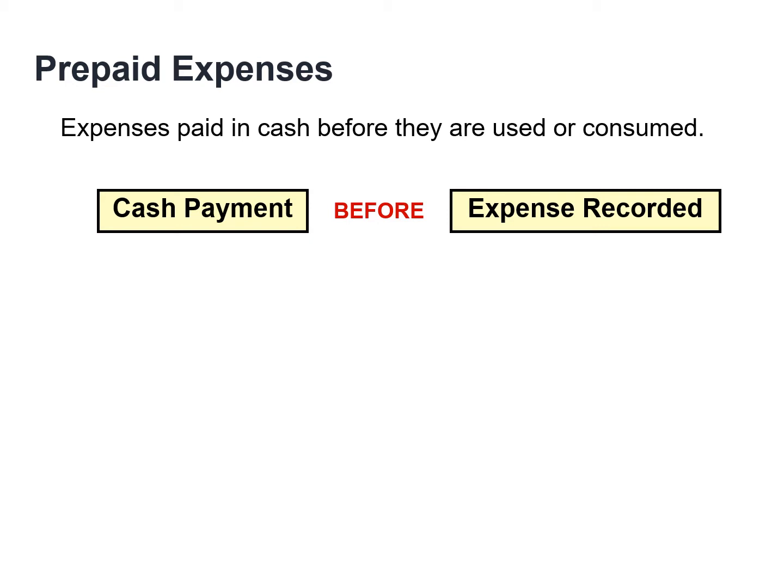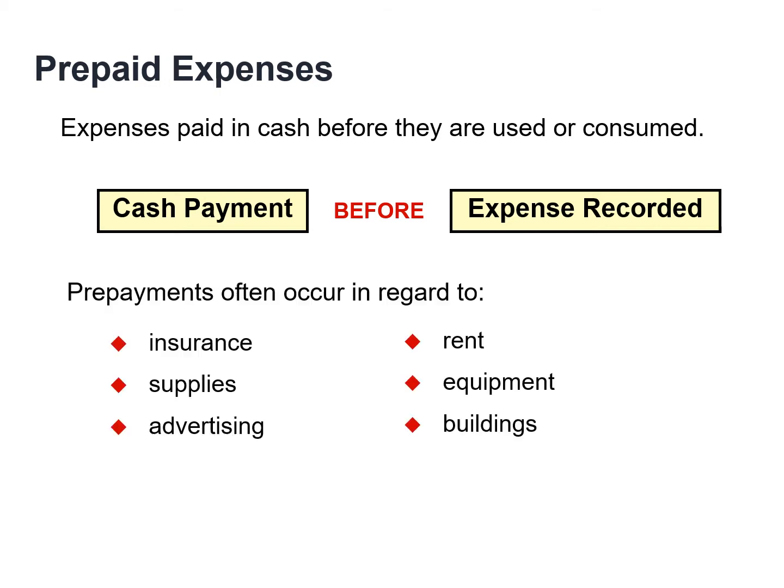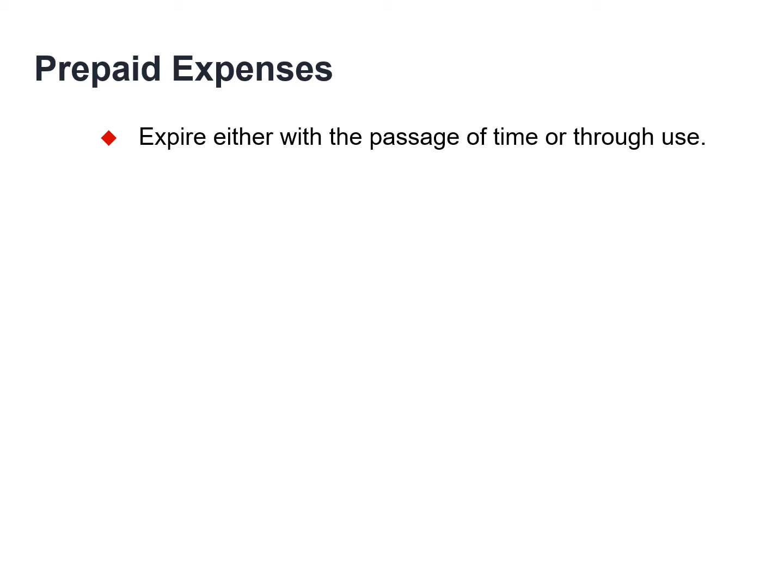When expenses are prepaid, an asset account is increased or debited to show the service or benefit that the company will receive in the future. Examples of common prepayments are insurance, supplies, advertising, and rent. In addition, companies make prepayments when they purchase buildings and equipment. Prepaid expenses are costs that expire either with the passage of time, such as rent and insurance, or through use, such as office supplies. The expiration of these costs does not require daily entries, but rather companies postpone the recognition of such cost until they prepare financial statements.